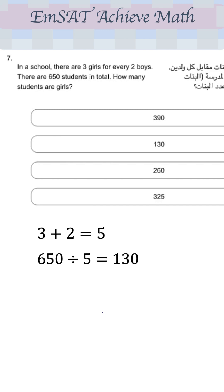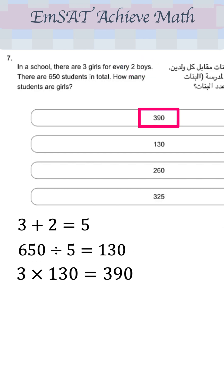And now if they are asking for girls, multiply 130 by 3, you get 390. If they are asking for boys, multiply 2 times 130 to get 260. Here they are asking for girls, so we get 390 girls.